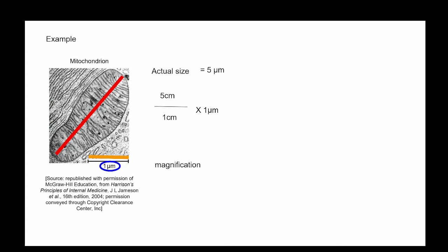For magnifications, we take the measurement of the diagram, 50,000 micrometers. If you're confused on how we got the 50,000 micrometers, remember from before we needed to convert centimeters into micrometers.